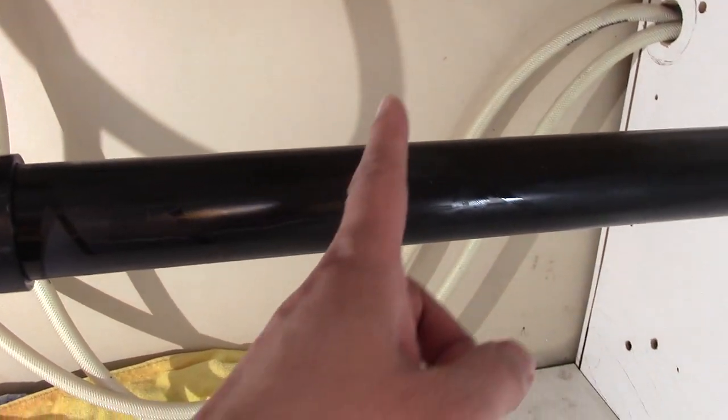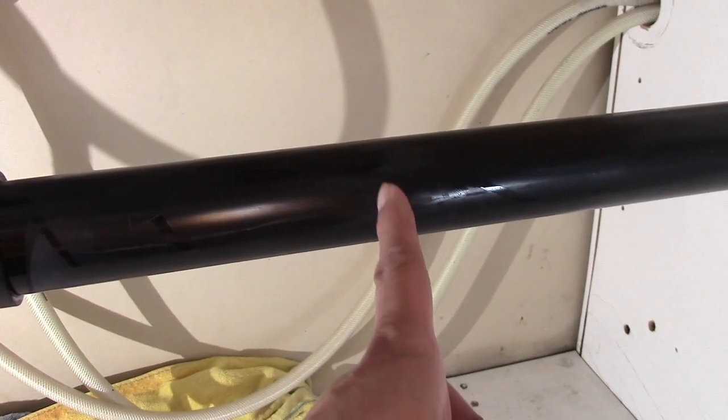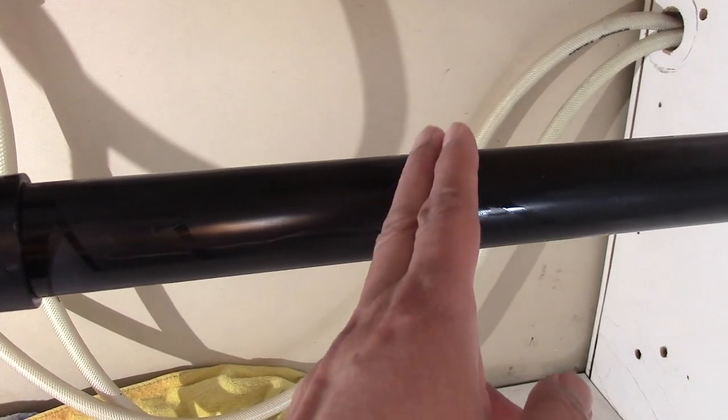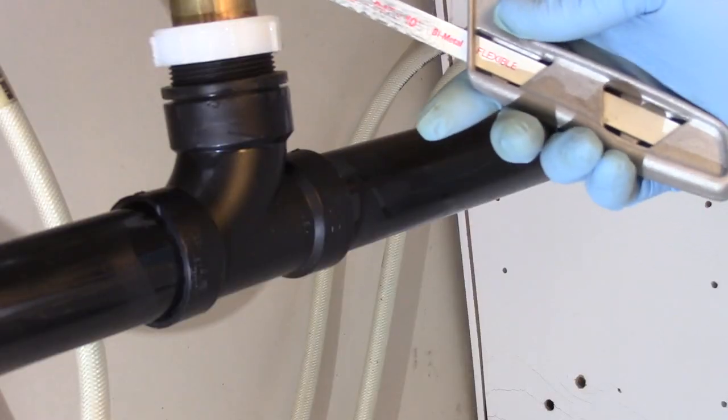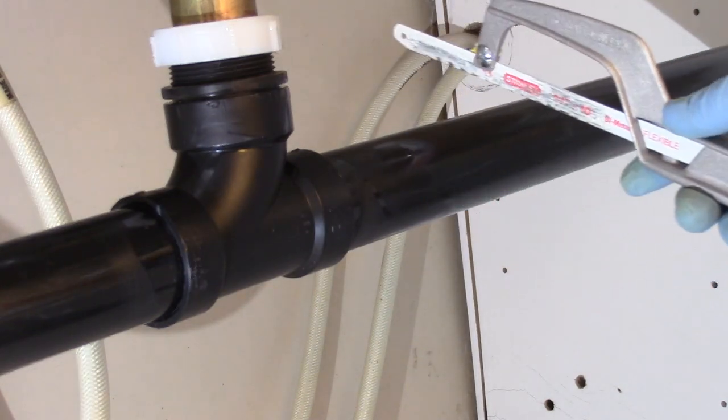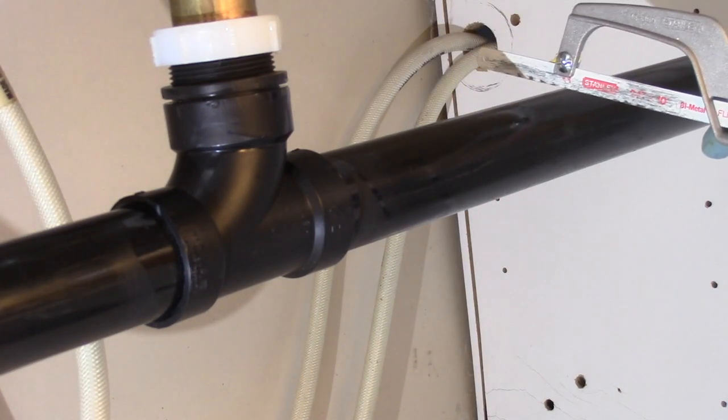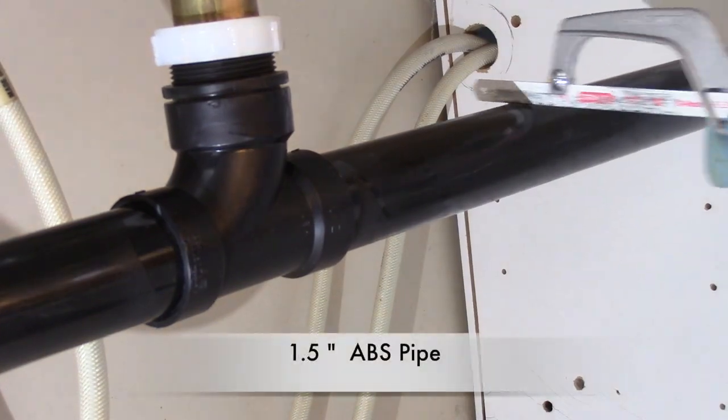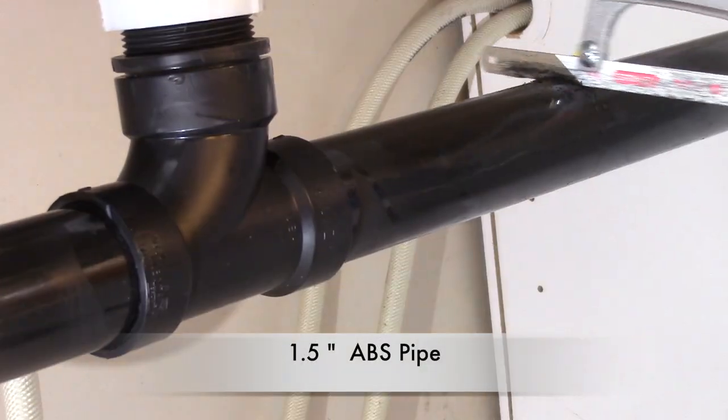This is the black ABS drain pipe we have to cut off and cap. We will cut it right here about eight inches away. Let's get started. First thing we do is use this hacksaw to cut off this drain pipe. This is one and a half inch diameter ABS pipe.